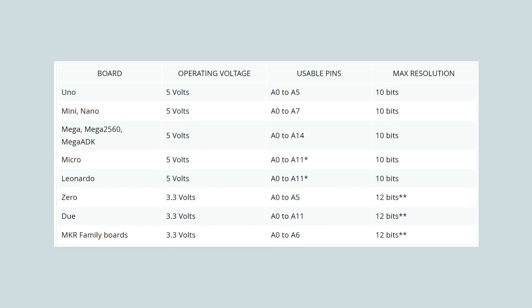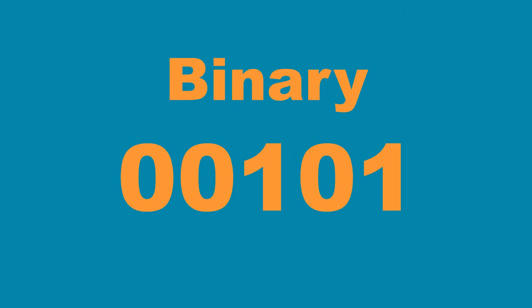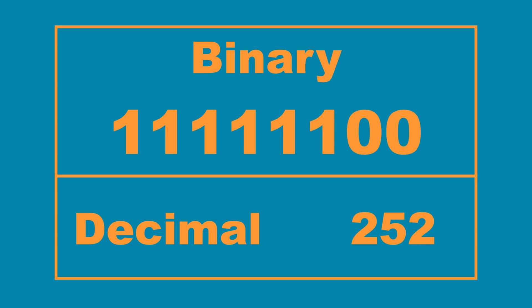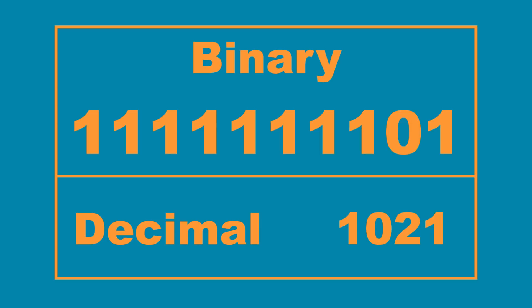Arduino boards contain a multi-channel 10-bit analog-to-digital converter. This means that it will map input voltages between zero and the operating voltage — 5 volts or 3.3 volts — into integer values between zero and 1023. To review: binary is base two, being a series of zeros and ones. Each number place counts to one, then rolls over. Binary can be noted as two to a power, with the power being the number of bits. So for a 10-bit number, if we multiplied two by itself 10 times, we would get 1024. Binary, and therefore the Arduino, start counting at zero. So if the resolution is 1024, the highest value is 1023.